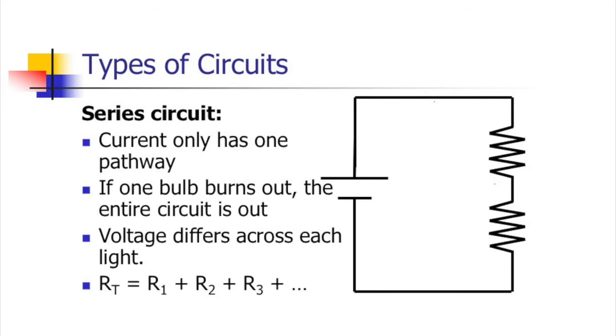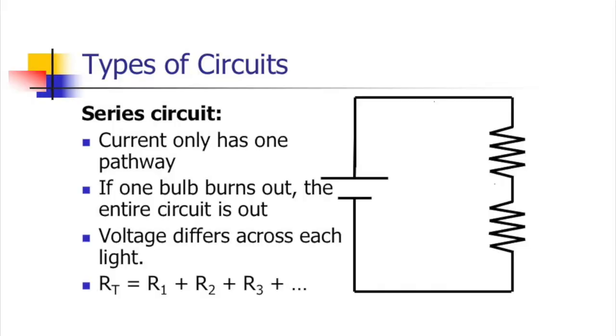In a series circuit, if one light bulb burns out they all go out because the current cannot complete its circuit and can't flow from positive to negative anymore. You probably learned this from elementary school with Christmas lights.